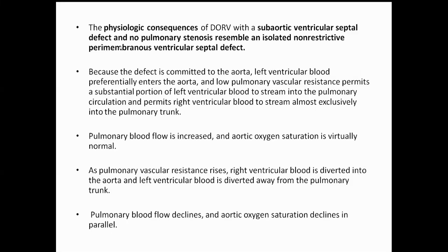The hemodynamics and physiological consequence of DORV depends upon the situation of the VSD. If the defect is committed to the aorta, the left ventricular blood enters the aorta. Therefore, pulmonary blood flow is increased, aortic oxygen saturation is maintained, and as pulmonary vascular resistance rises, right ventricular blood is diverted into the aorta and left ventricular blood is diverted away from the pulmonary trunk. Pulmonary blood flow declines and aortic oxygenation also declines in parallel.